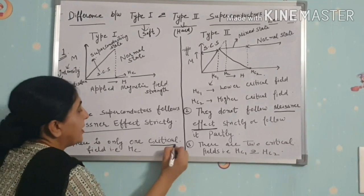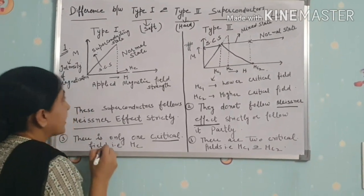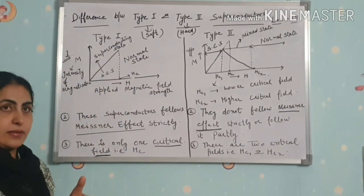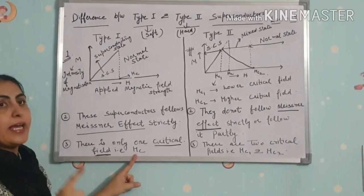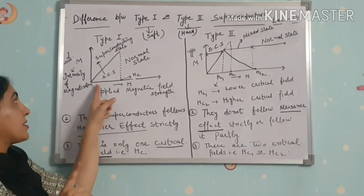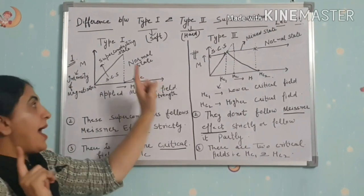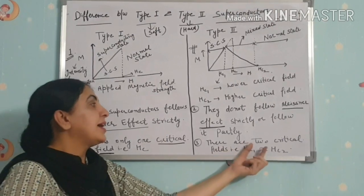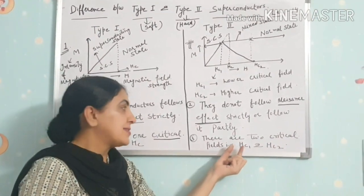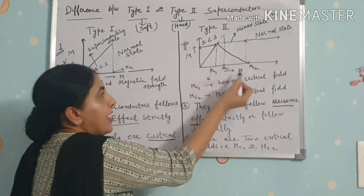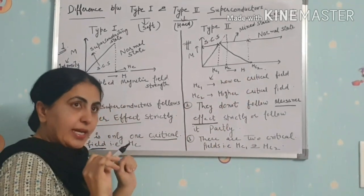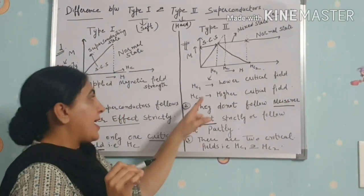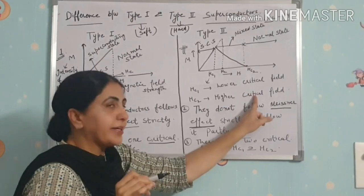Third difference: Type 1 superconductors have only one critical field, Hc. At this critical field they transition to the normal state. Type 2 superconductors have two critical fields — Hc1 (lower critical field) and Hc2 (higher critical field).